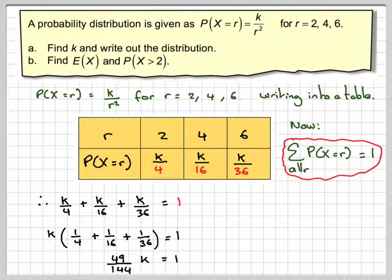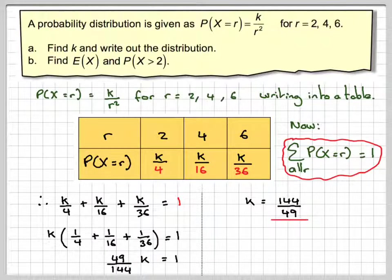If you add those together, you get 49/144 times k is equal to 1. k will be 144/49.